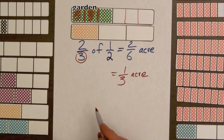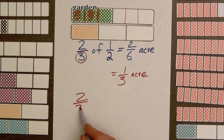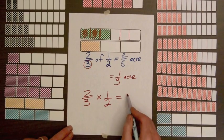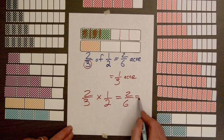Writing this equation using the times sign, we have two-thirds times one-half equals two-sixths, or one-third.